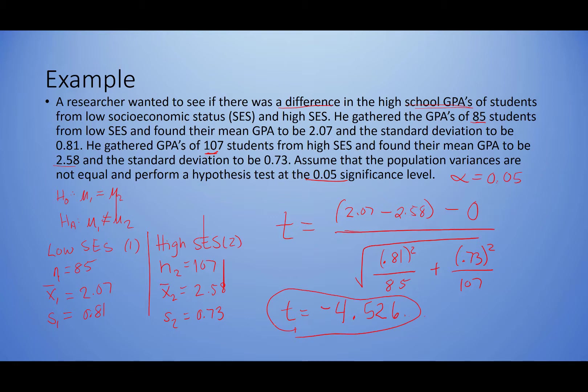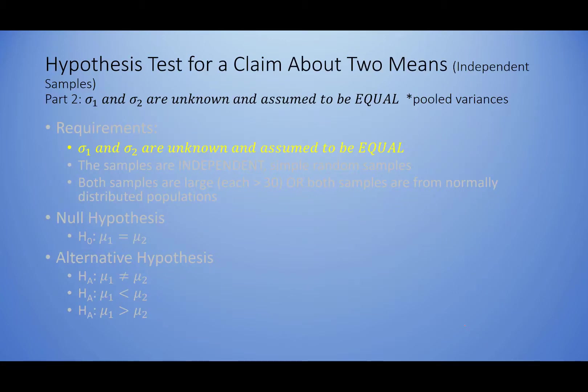Our degrees of freedom: we take the smaller sample size, which is 85, and subtract 1, giving us df = 84. At this point you would choose whether to do the p-value method or the critical value method — I'm not going to go through that in this video because I have covered it multiple times in the other videos on hypothesis testing basics, proportions, and single means.